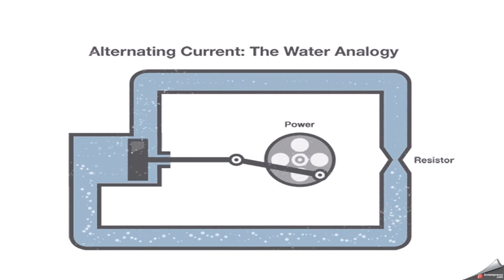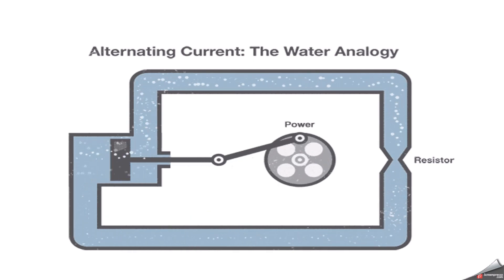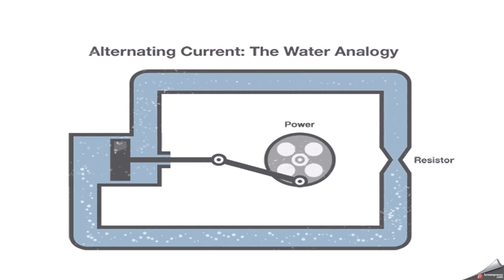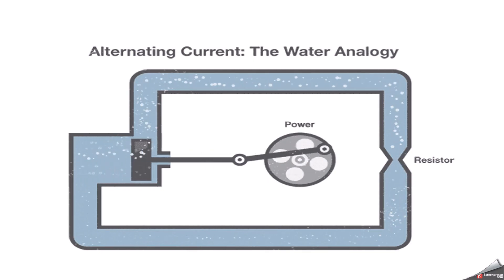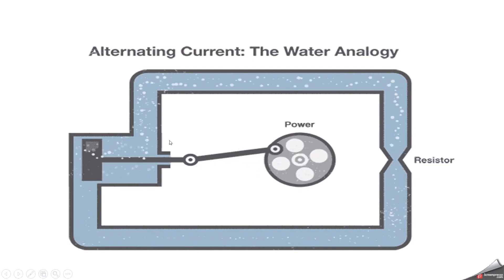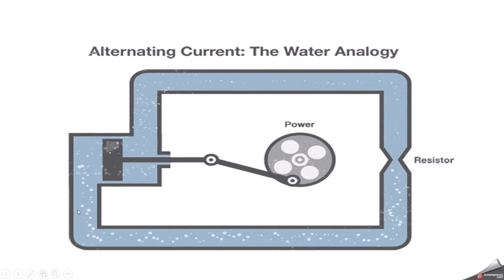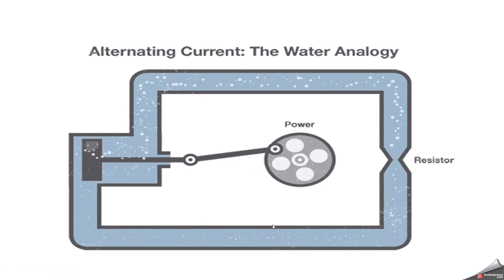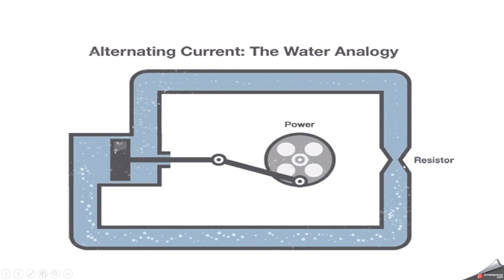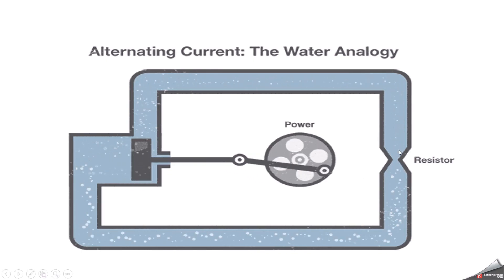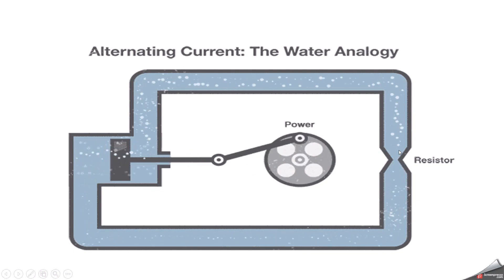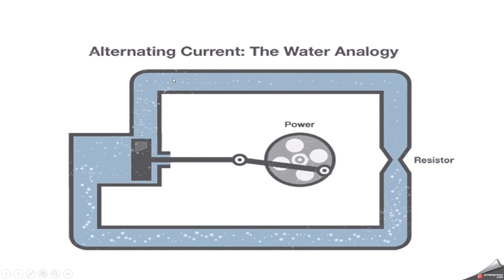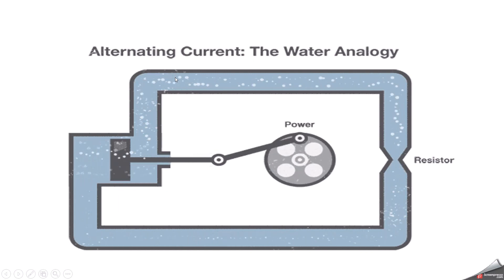Now we can understand alternating current with one animation video. Here, to generate AC, in a set of water pipes, we connect a mechanical crank to a piston that moves water in the pipes back and forth. You can see water has flow in this direction as well as in this direction. You can notice that the pinched section of pipe still provides resistance to the flow of water regardless of the direction of flow. So this is a clear example to understand how alternating current works.